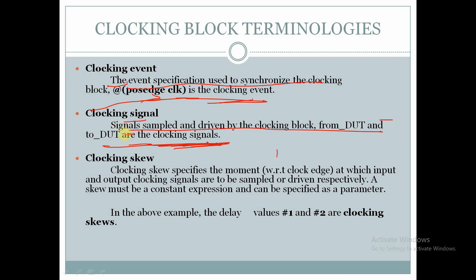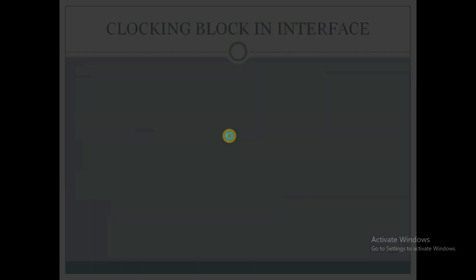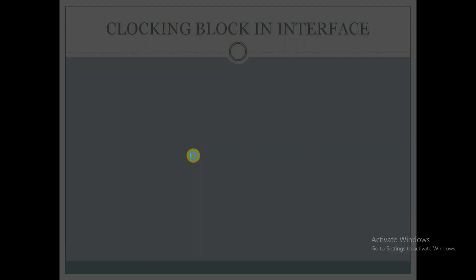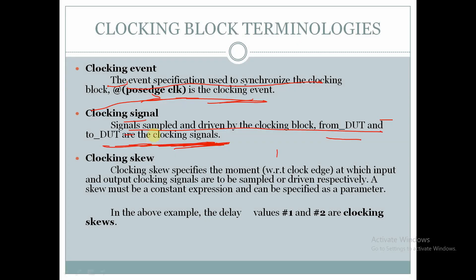Clocking signals: signals sampled and driven by the clocking block from DUT and to DUT are the clocking signals. In this example, some signals are driven from test bench to DUT and some signals are driven from DUT to test bench. Accordingly, we will declare the input and output.